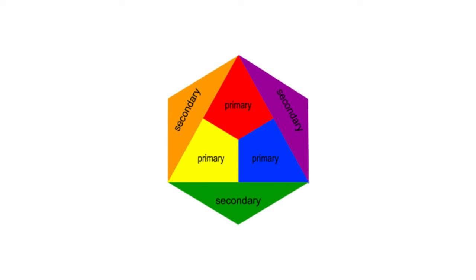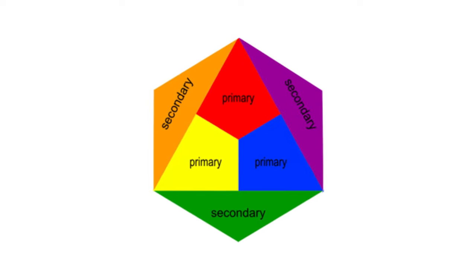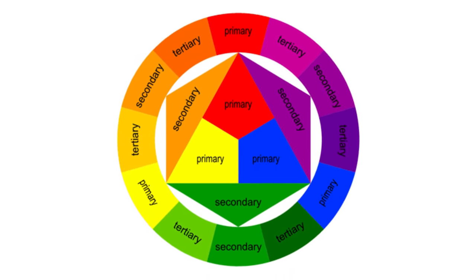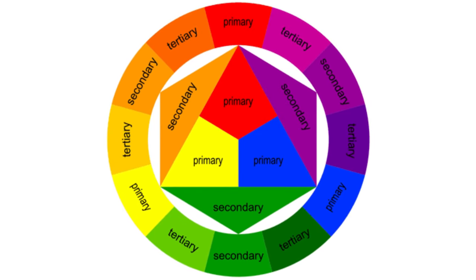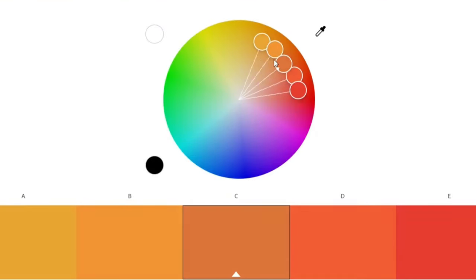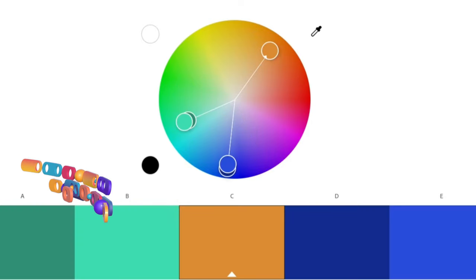Secondary colors are created by mixing any two primary colors — they are orange, green, and purple. Tertiary colors are third-level colors created by mixing both primary and secondary colors, like violet, teal, or magenta. A color scheme means the arrangement of colors in a pleasing way, usually for an army or fighting force.